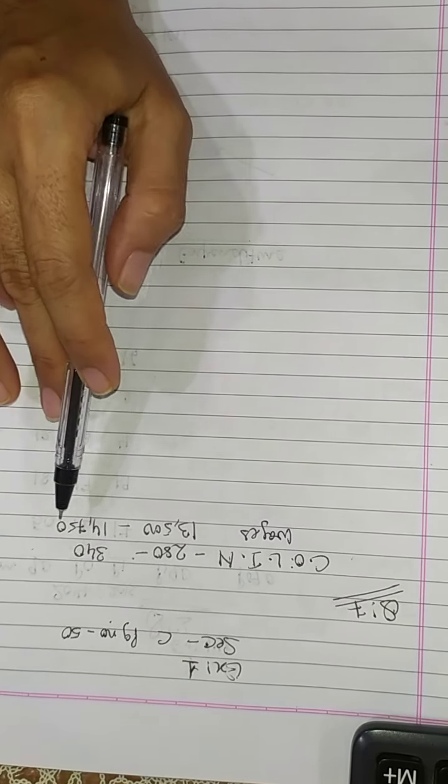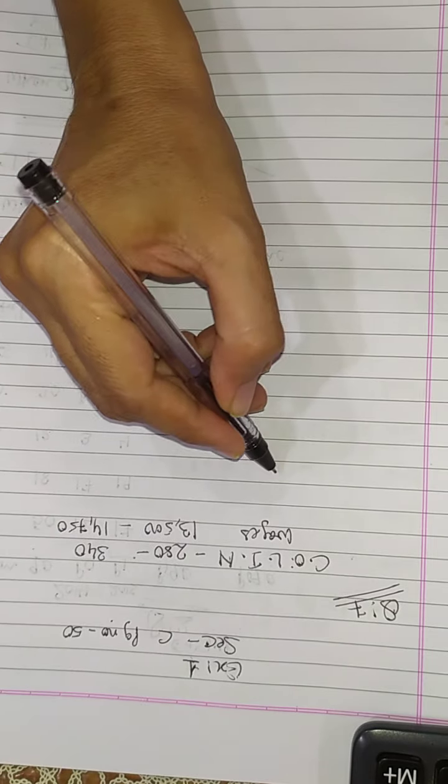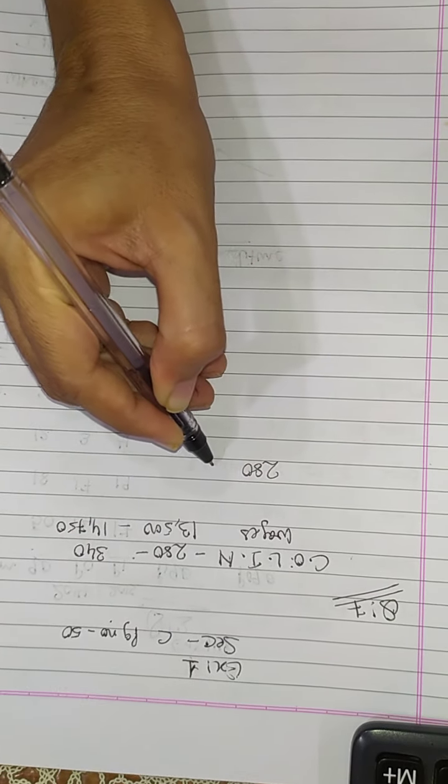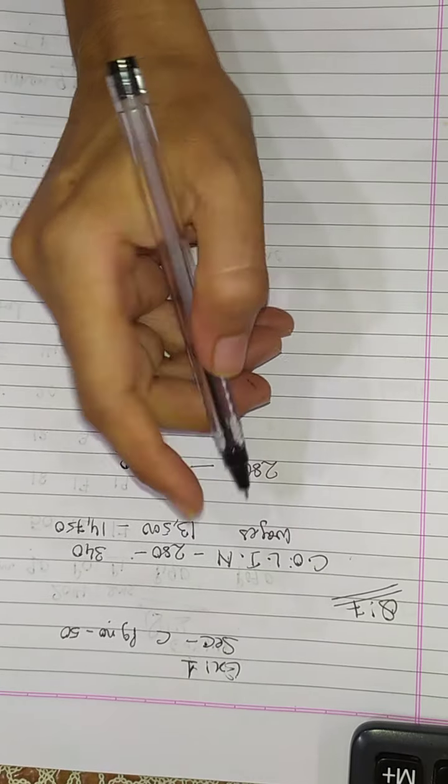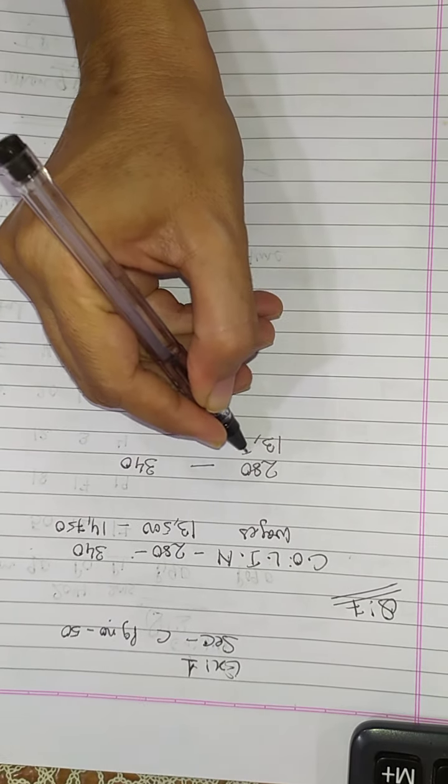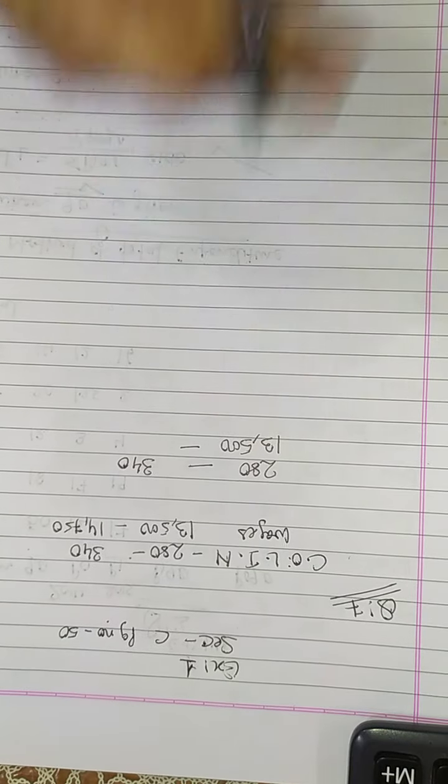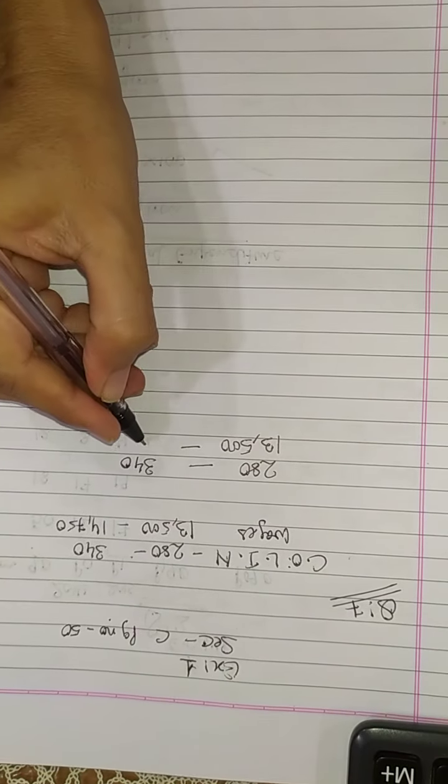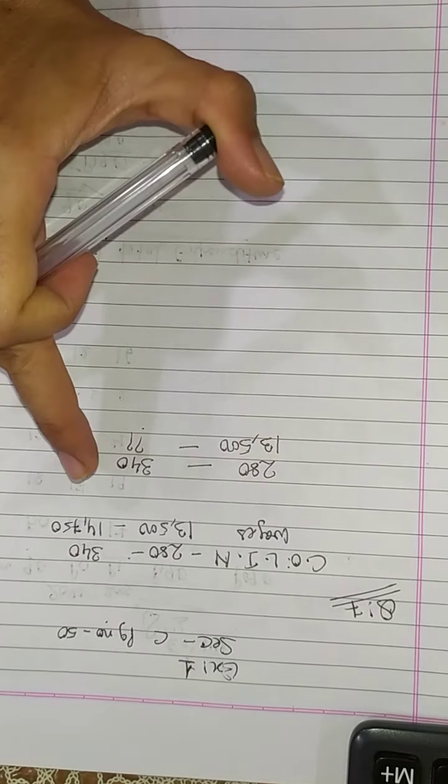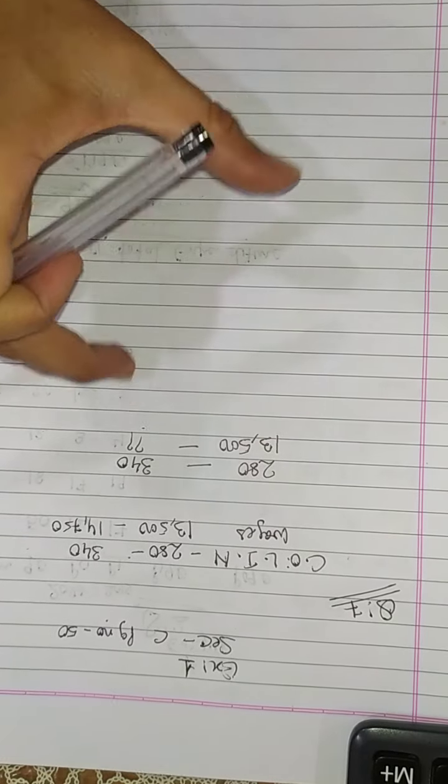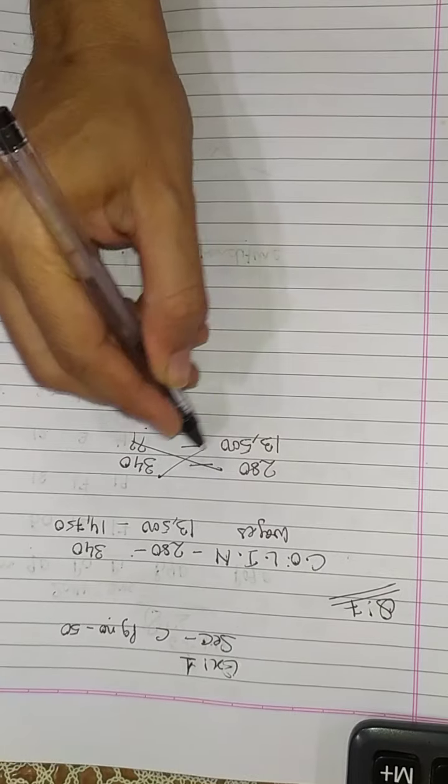So let's check. Index number increased from 280 to 340, so proportionately the wages are increased from 13,500 to what? Let me check it proportionately. If 280 ka 340 hota hai to 13,500 ka kitna hota hai? Do it cross multiply.